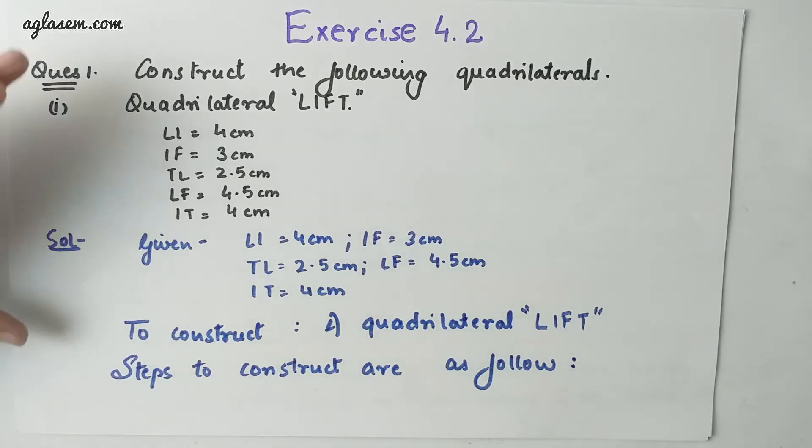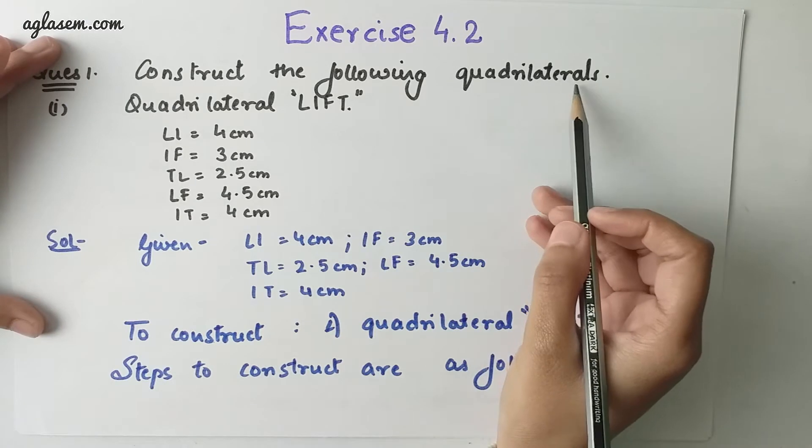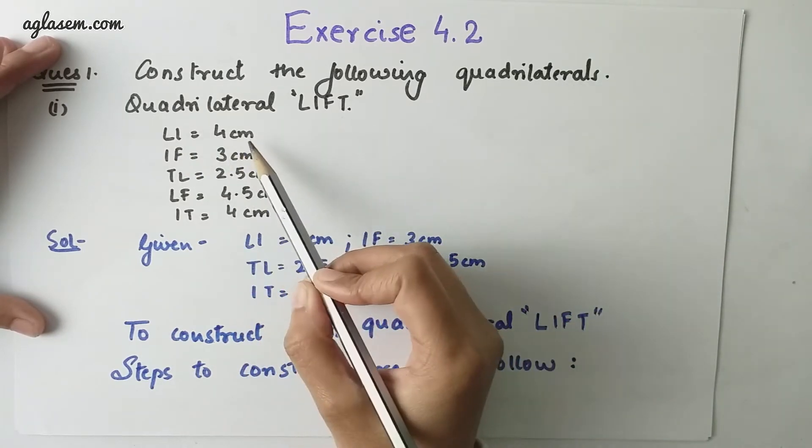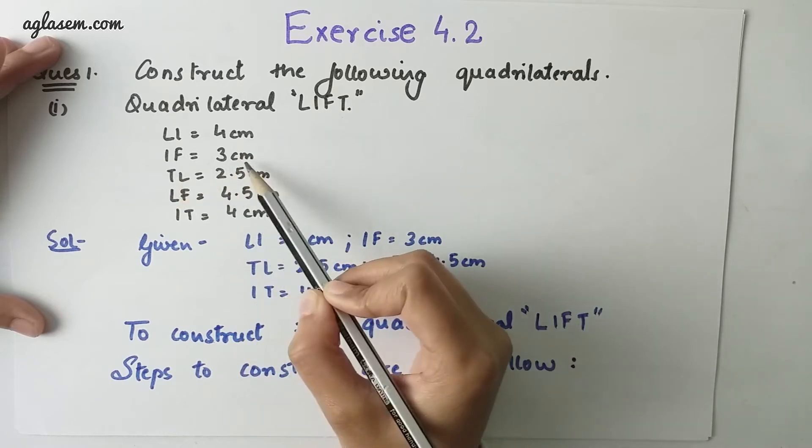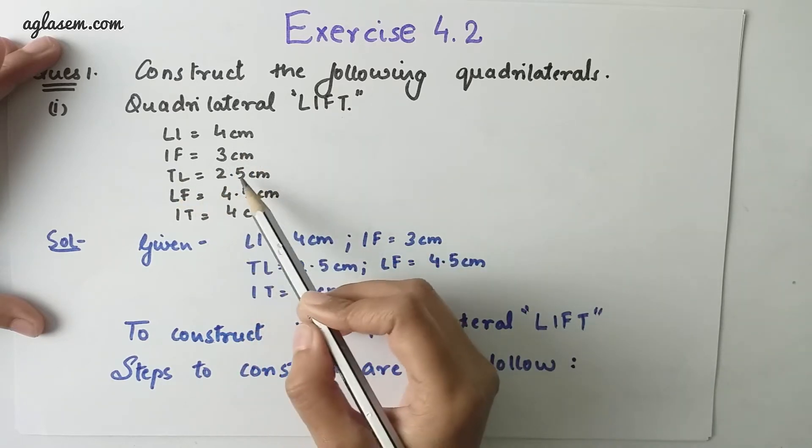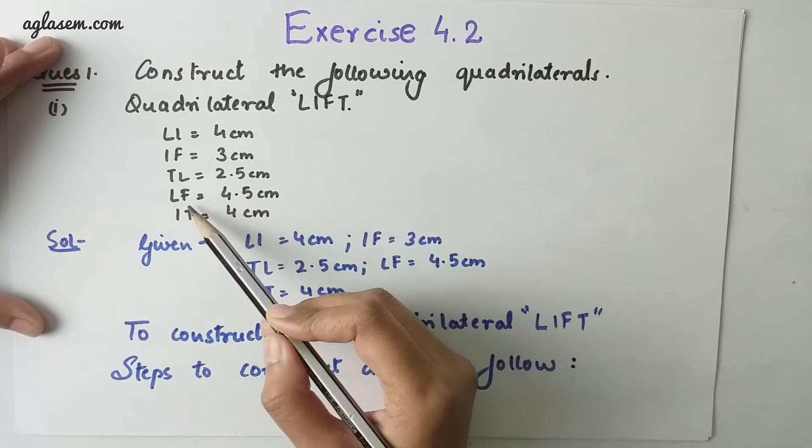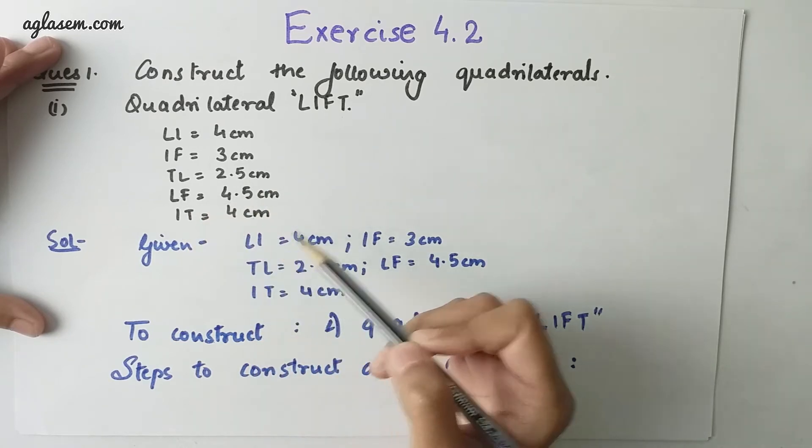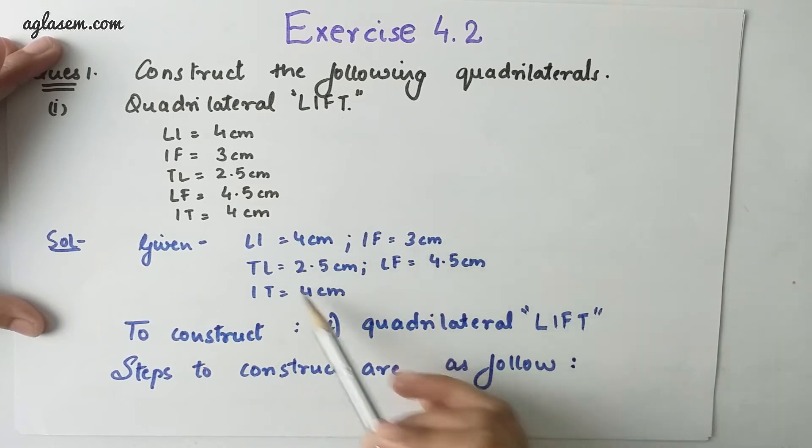Moving to our first question: construct the following quadrilaterals, quadrilateral LIFT in which LI is 4 cm, IF is 3 cm, TL is 2.5 cm, LF is 4.5 cm, and IT is 4 cm. So all these are the given values.